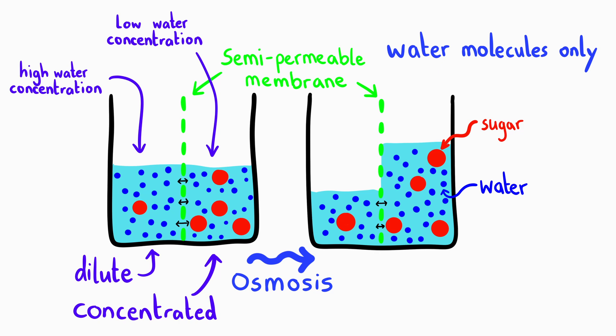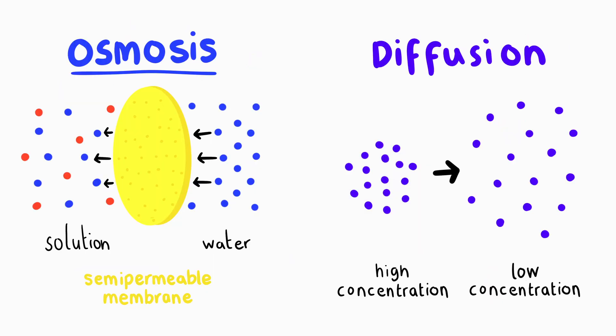Another way to think about it is that water moves from a dilute solution to a more concentrated solution. This movement continues until the concentration on both sides are equal or until pressure prevents further movement. The key difference between osmosis and diffusion is that osmosis specifically refers to the movement of water molecules across a membrane. Diffusion, on the other hand, can involve any substance.